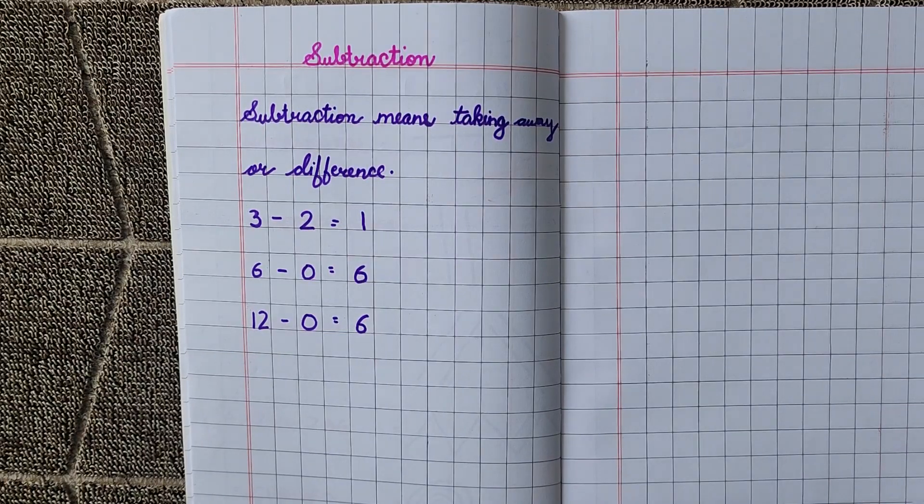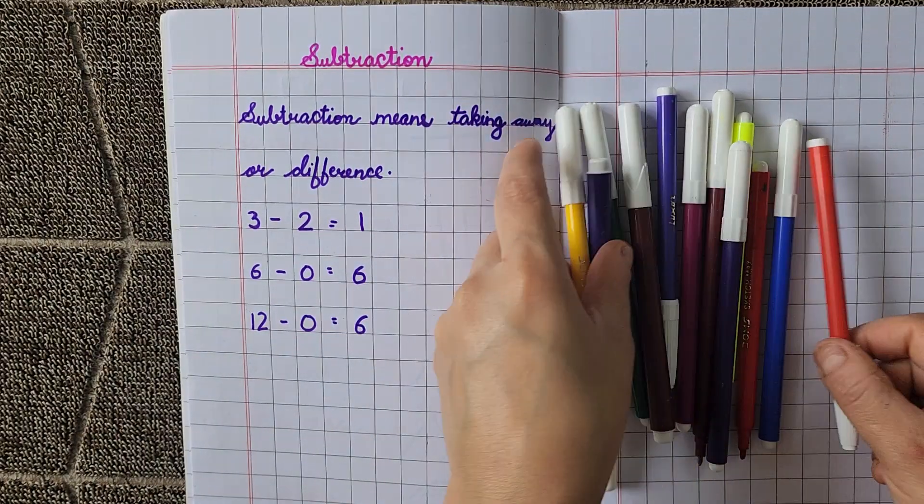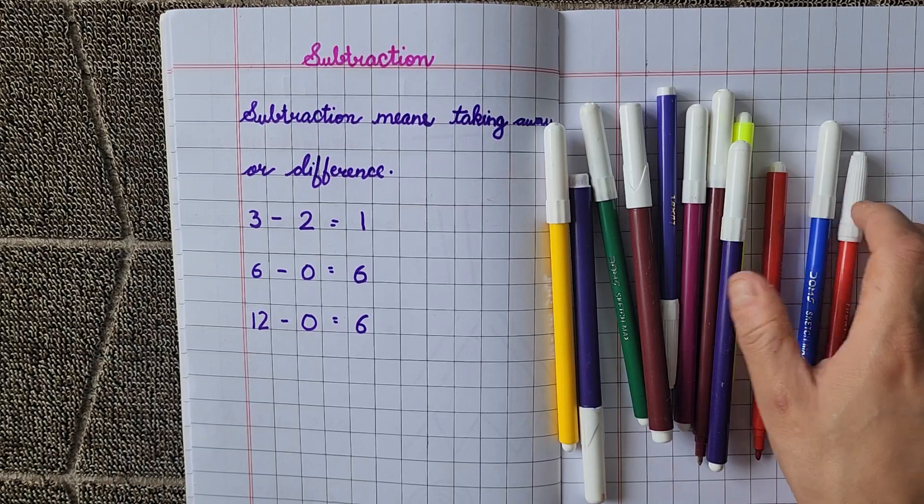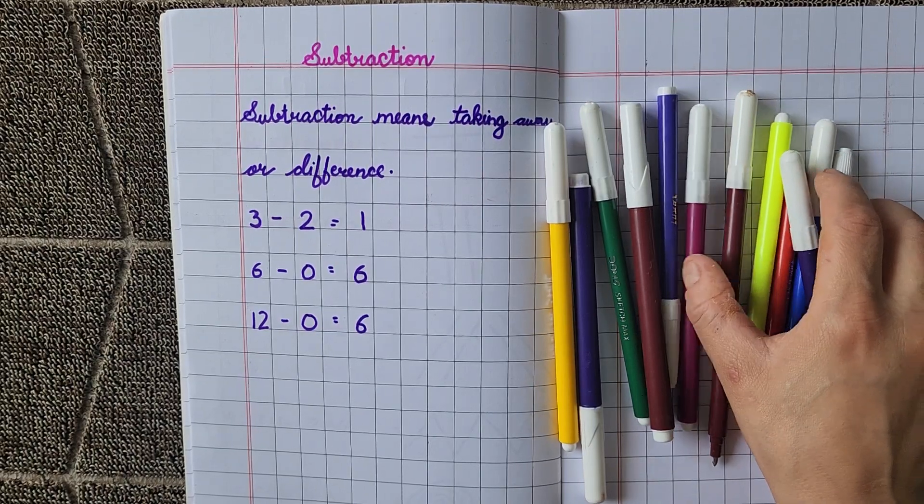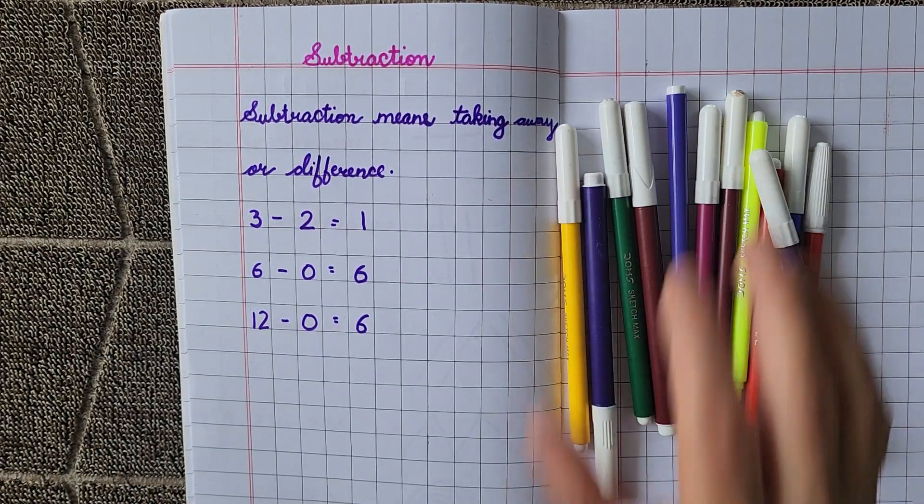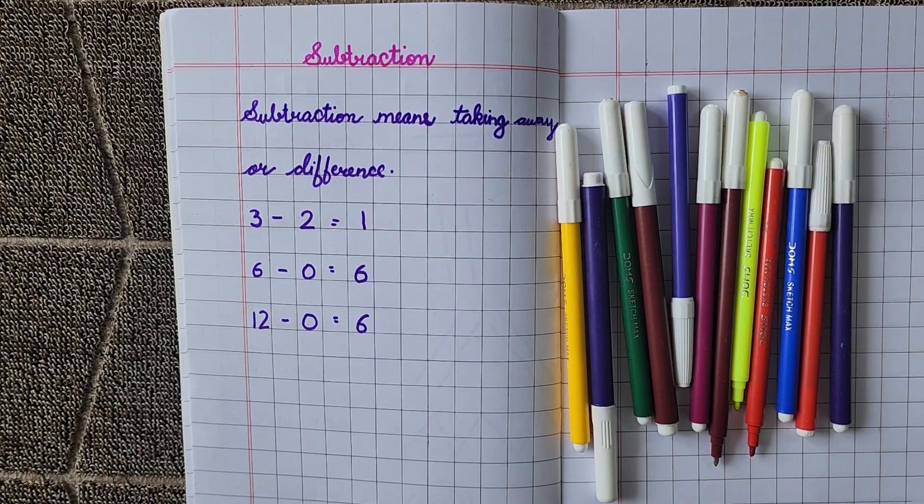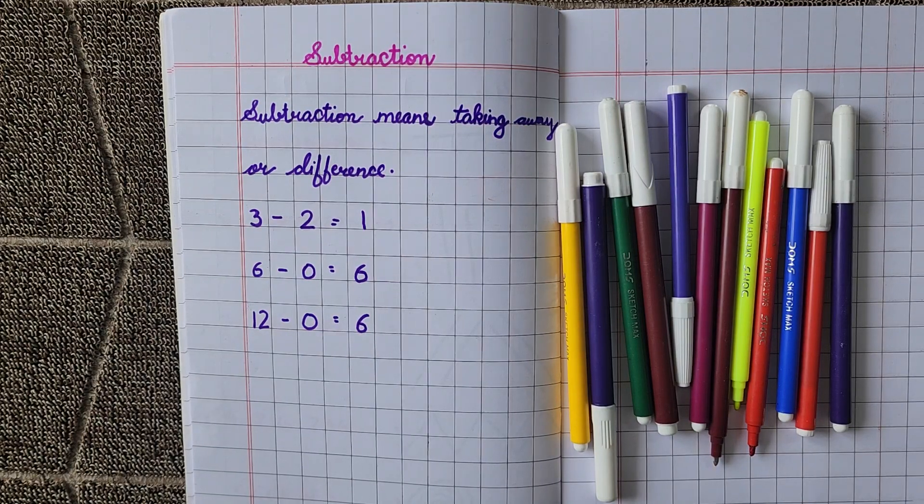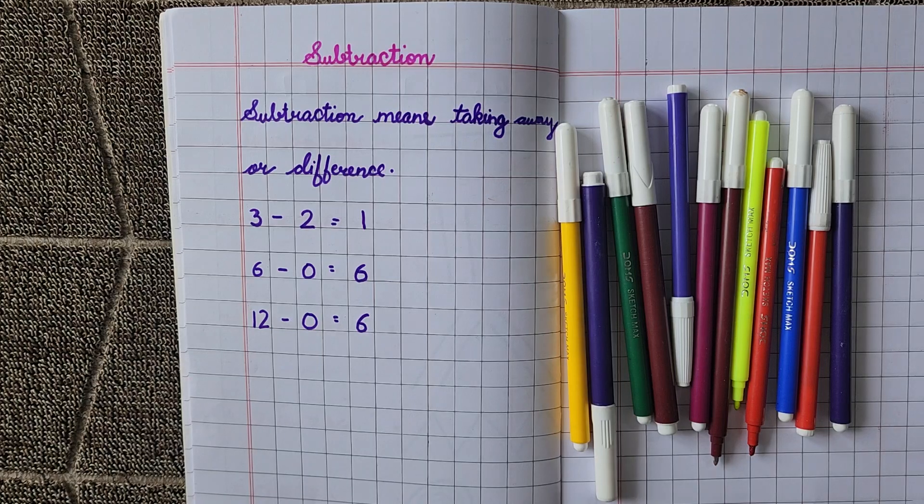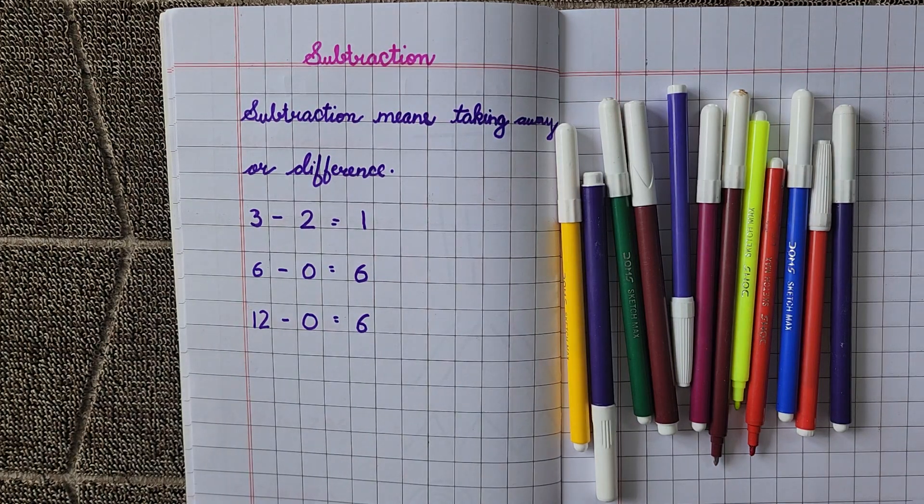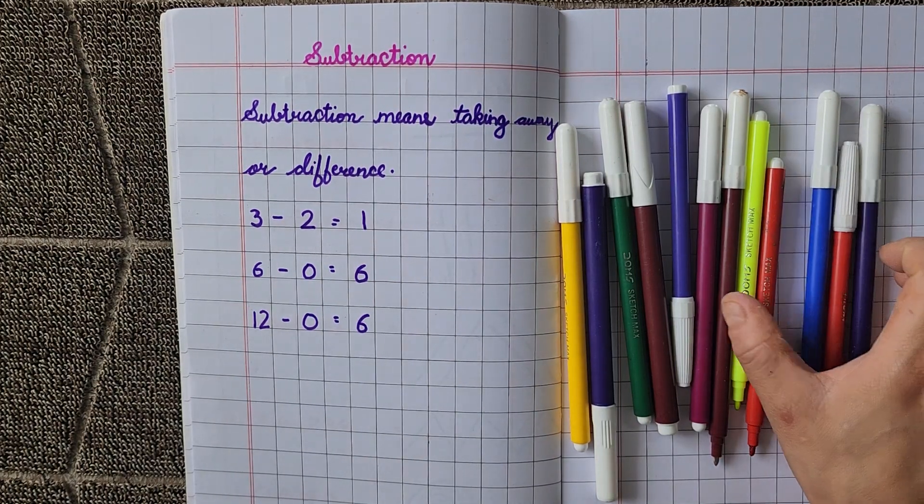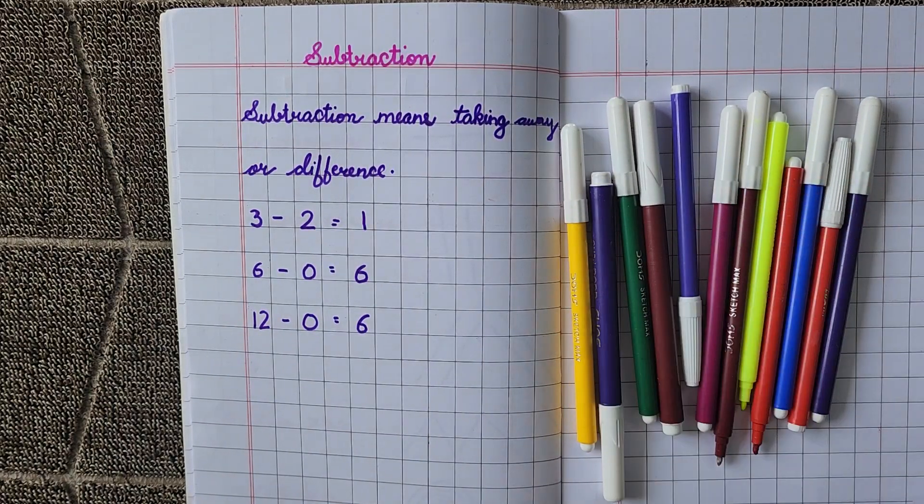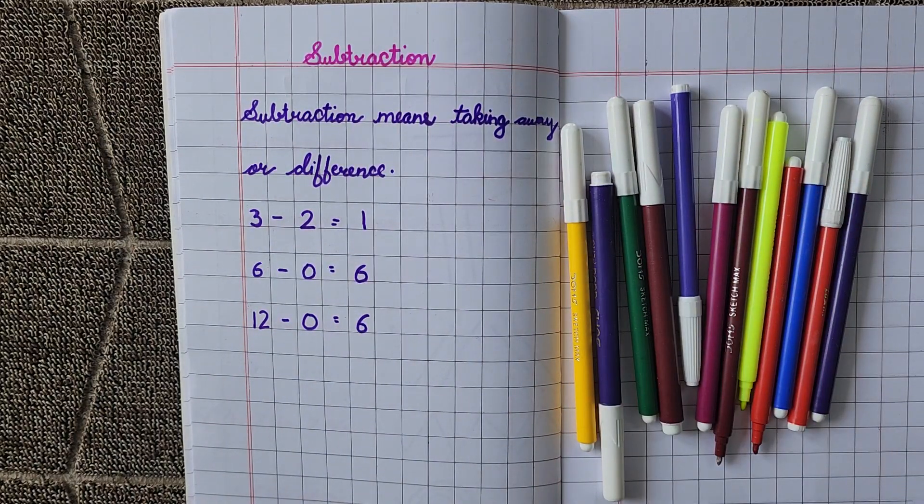I will tell you with these colors. How many colors do I have? 1, 2, 3, 4, 5, 6, 7, 8, 9, 10, 11, 12. I have 12 colors with me. Ab meinne is mein se zero color minus kiya. Zero color subtract kiya means mainne kuch bhi is mein se nahi liya. So number of colors with me, same: 1, 2, 3, 4, 5, 6, 7, 8, 9, 10, 11, 12. So 12 minus 0 is equal to 12.